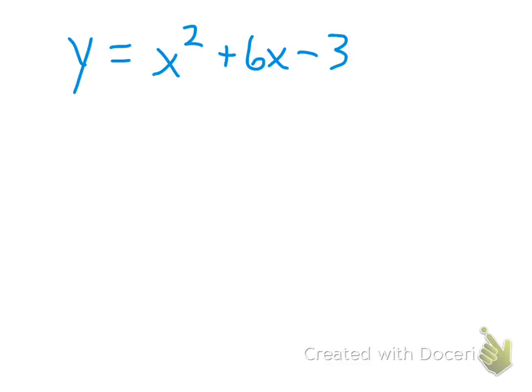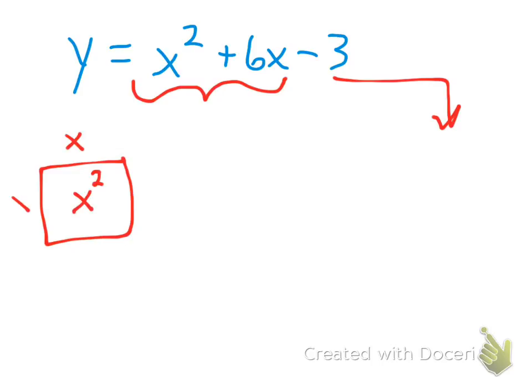I am going to go through one more example here, doing the same process that I just talked about. So again, I am going to look at just these. That negative 3 I am going to keep off to the side. So I have an x squared, which means I have side lengths of x and x. I also then have 6 x's. So how many x's need to go on each side? Hopefully you are saying 3 of them.